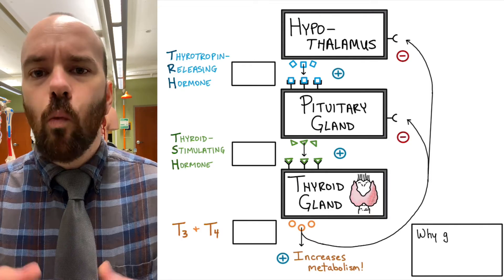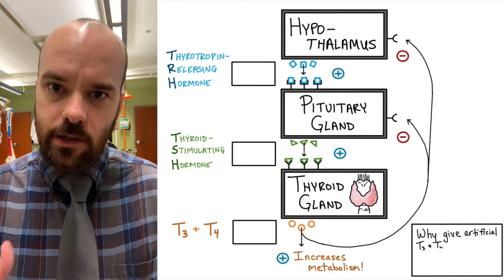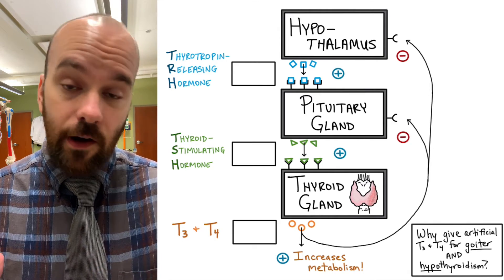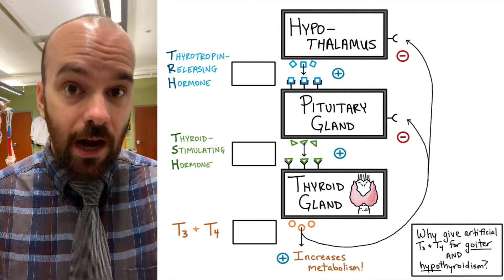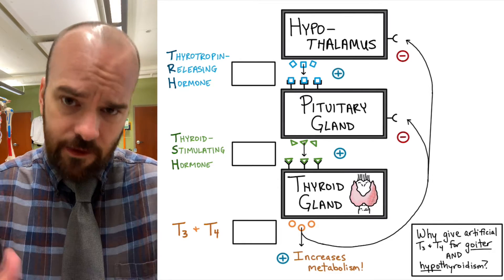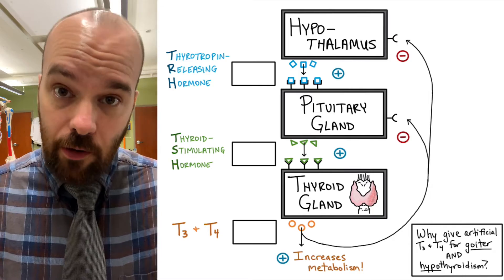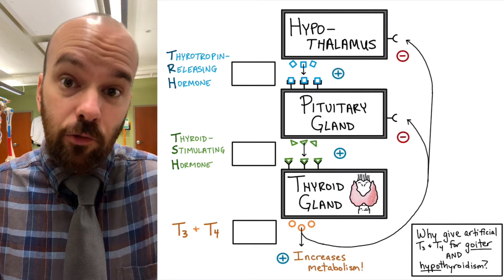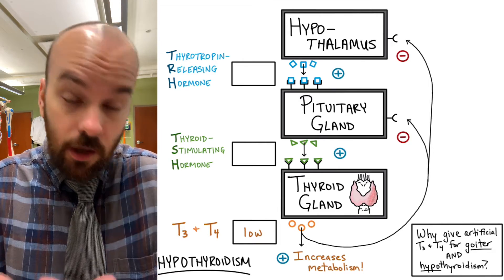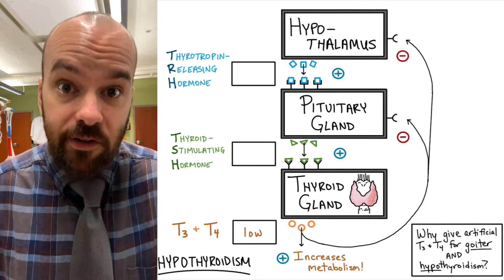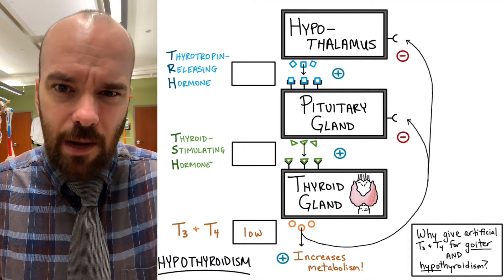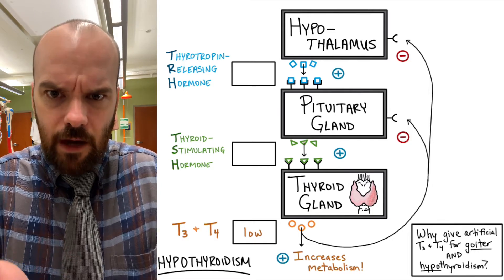Finally, I want to answer this question: why give artificial T3 and T4 for both goiter and hypothyroidism? A common treatment for various endocrine disorders is prescribing an artificial version of a hormone the body normally produces. For hypothyroidism, this makes a lot of sense — T3 and T4 production will be low, so the patient is prescribed artificial T3 and T4 to take over the function the body is not providing. But in the case of a goiter, an enlarged thyroid gland, why would we prescribe T3 and T4, the hormone the thyroid makes itself anyway?